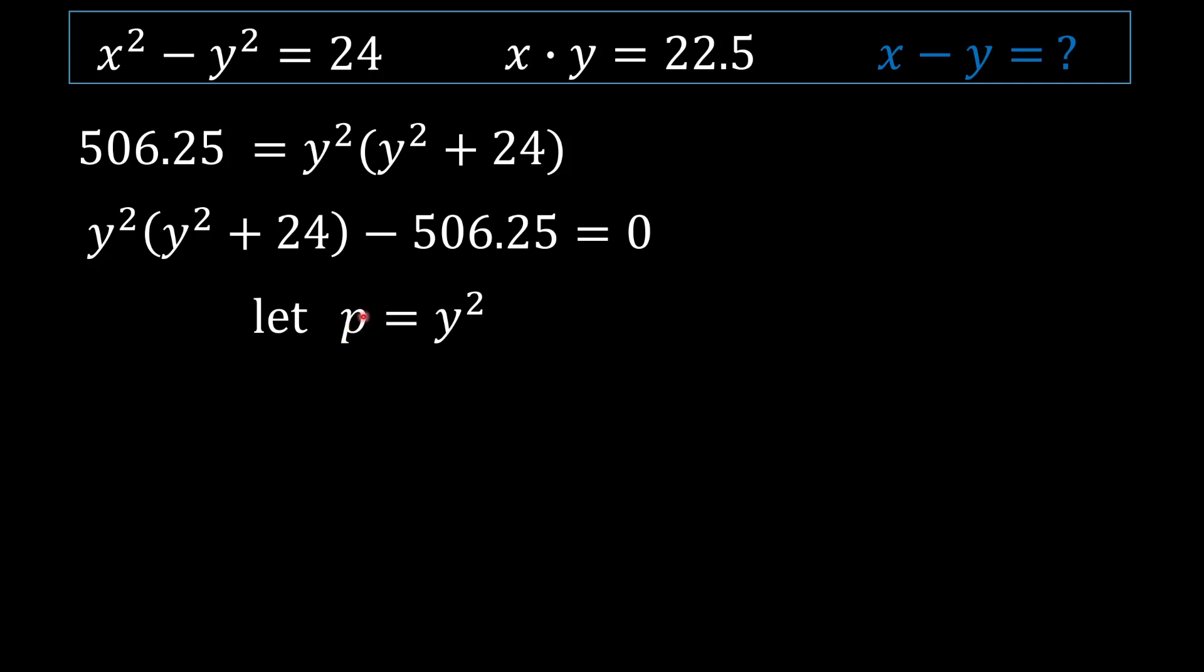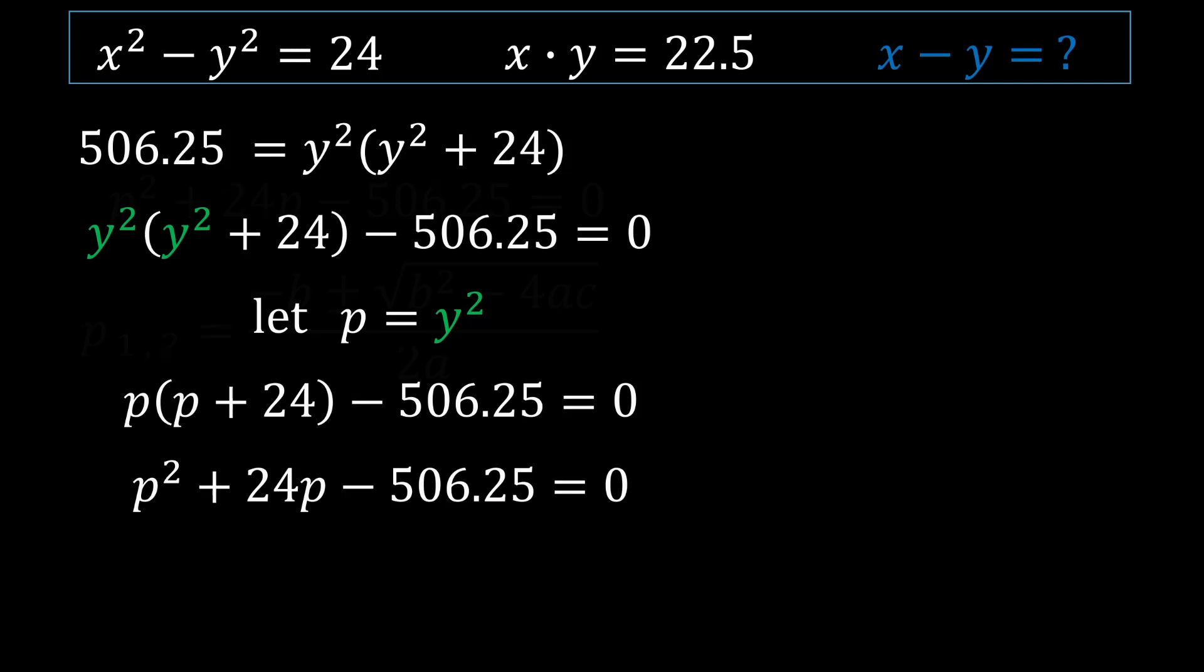And then to do so, we're going to write y squared in terms of p. And when we do that, what you are going to be obtaining is p squared plus 24p minus 506.25. And we're going to use a quadratic formula to solve our p variables. We're going to have a p1 and a p2.